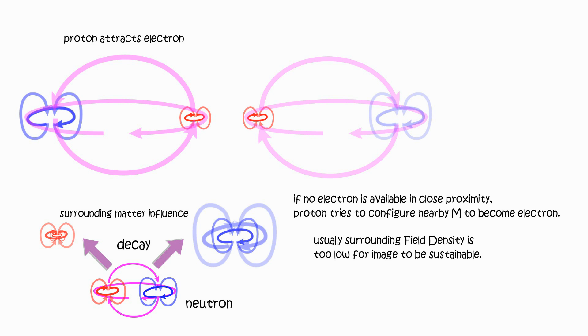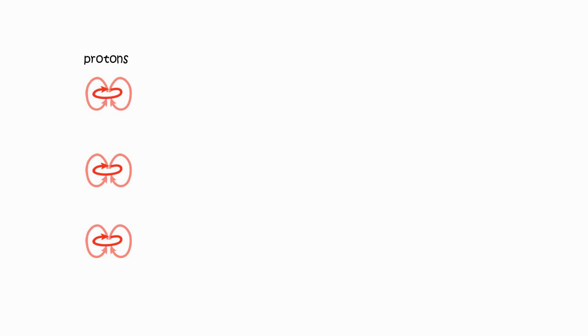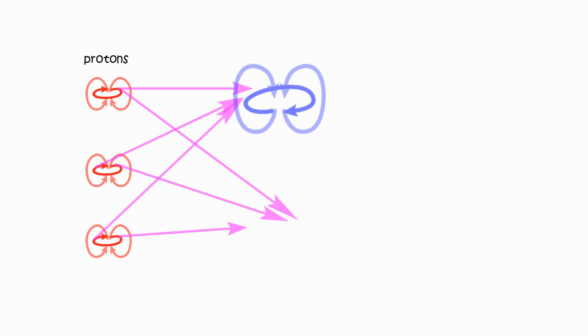Creation of electron inevitably also creates anti-electron, to balance the interaction with surrounding. Proton prefers to create electron, while anti-electron is the undesired by-product. So when multiple protons configuring new electrons together, many electrons can share creation of the less preferred anti-electron.